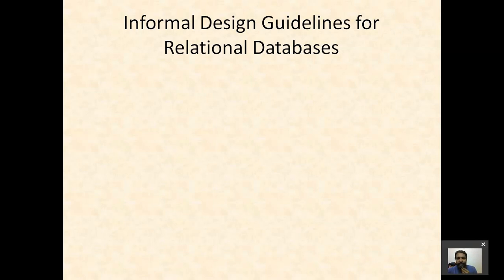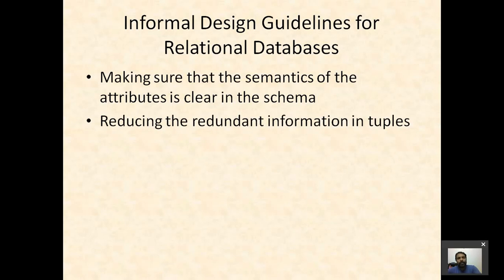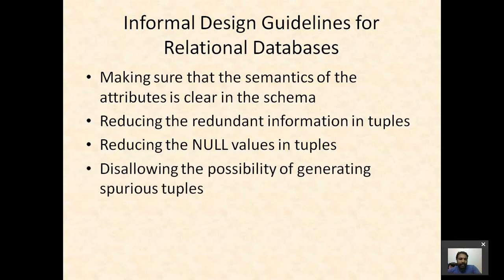In the first part of this session we'll be learning about the informal design guidelines for relational database design. There are mainly four informal design guidelines. First: making sure that the semantics of the attributes is clear in the schema. Second: reduce redundant information in tuples. Third: reduce null values in tuples. Fourth: disallow the possibility of generating spurious tuples.